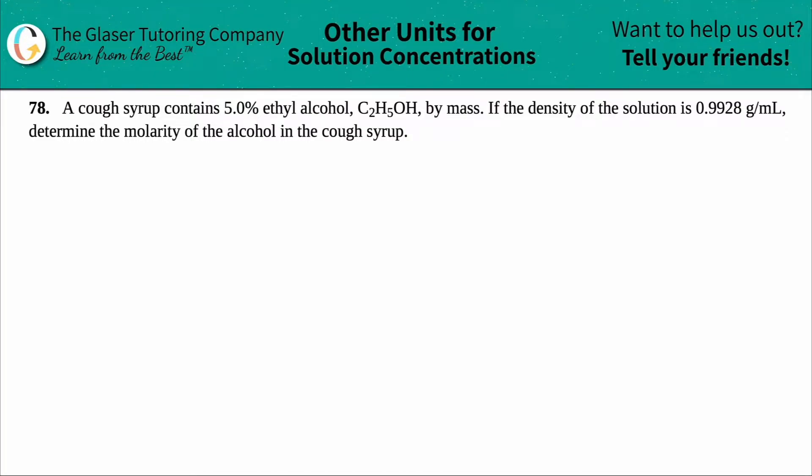Number 78. A cough syrup contains 5.0% ethyl alcohol, which is C2H5OH by mass. If the density of the solution is 0.9928 grams per milliliter, determine the molarity of the alcohol in the cough syrup.